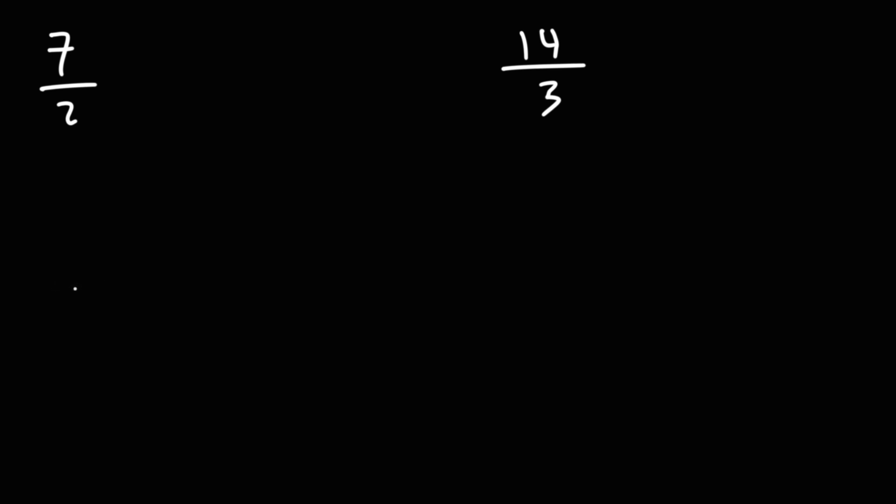What we're going to do is divide 7 by 2. So 2 is going to go on the outside, 7 is going to go on the inside. Now how many times does 2 go into 7? 2 goes into 7 three times. 2 times 3 is 6, 7 minus 6 is 1.